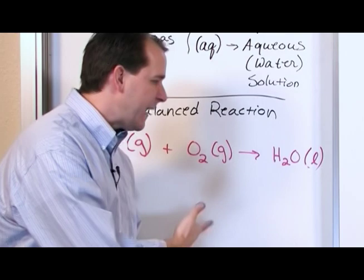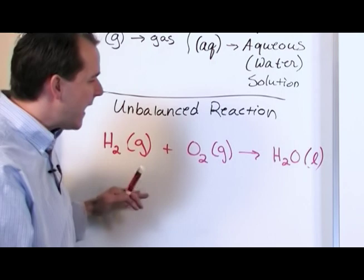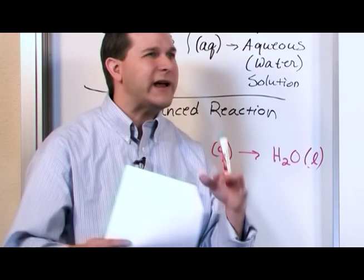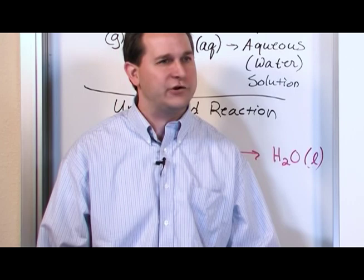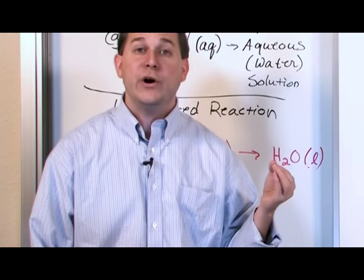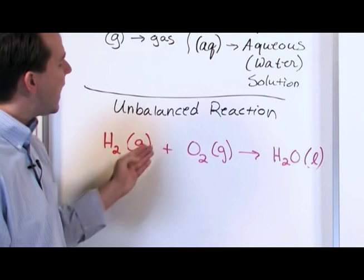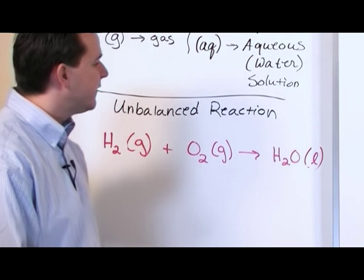As written, this chemical reaction is basically not possible — it cannot happen this way. The hydrogen can combine with oxygen to give water, but the ratios are all wrong. I have two atoms of oxygen on the left and only one on the right. That violates the law of conservation of mass — you cannot have a reaction where you end up with less oxygen than you started with. So you have to balance this reaction.